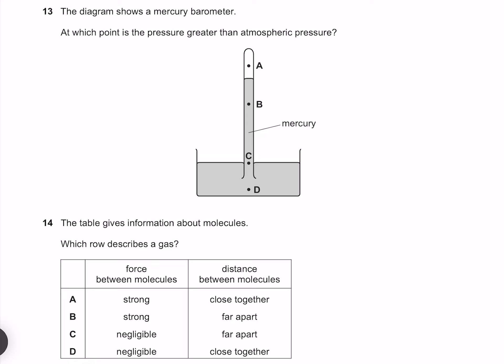The diagram shows a mercury barometer. At which point is the pressure greater than atmospheric pressure? Our greatest pressure is going to apply at our point D, because it's both going to experience the pressure from the atmosphere, but also the pressure from the mercury above it.